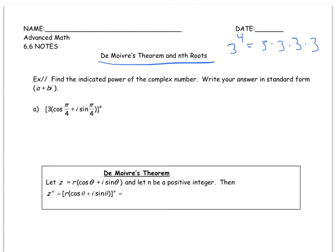So with that in mind, let's look at this first example. We need to find the indicated power of the complex number and to write our answer in standard A plus B I form.